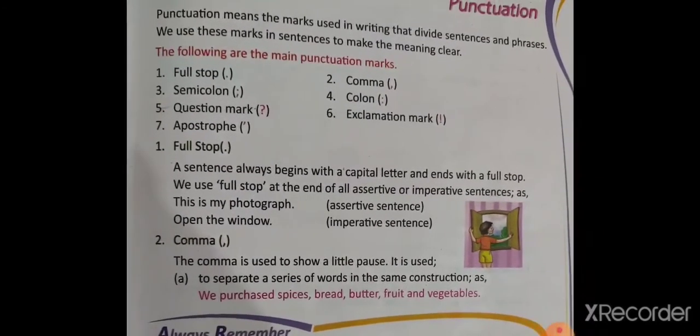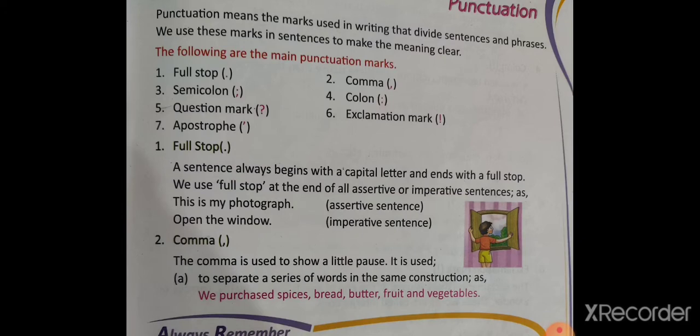There are 7 types of punctuation marks that you have to remember. First is full stop. Full stop is used when we have to end the sentence. Whenever we are starting another sentence after the full stop, the first alphabet of the first word is always capital. A sentence always begins with a capital letter and ends with a full stop. We use full stop to end all assertive or imperative sentences, such as 'This is my photograph' and 'Open the window.'